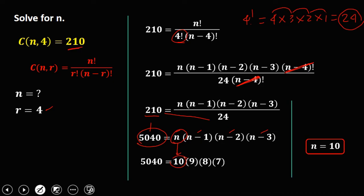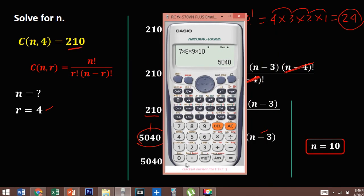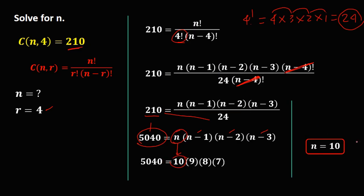To check the answer: if n equals 10, we have 10 choose 4, and that equals 210. So n equals 10.